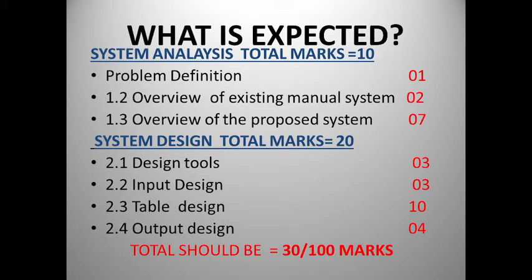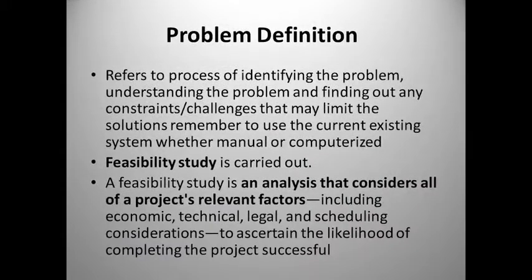Milestone 1 is 30 out of 100 marks. The examiner will be interested in two parts: system analysis, which has 10 marks, and system design, totaling 20 marks. In system analysis, you will be expected to write about problem definition, overview of the existing manual system, and overview of the proposed system. In system design, you'll cover input design, table design, and output design.